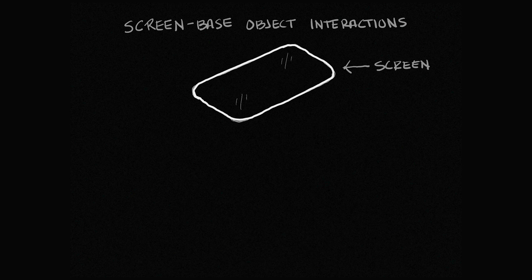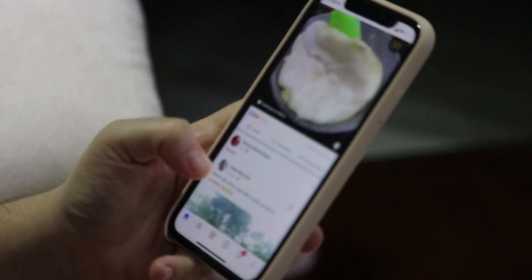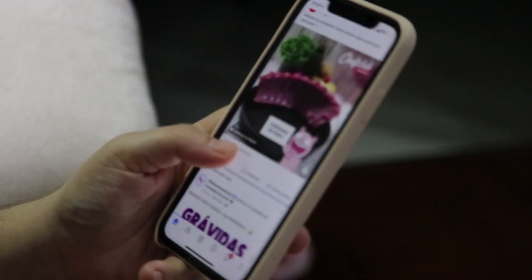There are two ways that I like to think about screen-based product design interactions: the ones that are screen-based and the ones that are object-based. Screen-based interactions are all the interactions that depend on you directly touching the screen to be able to manipulate the content. On the iWatch, these would be the existing gestures like the single-click, double-click, and screen swipes — all of these require you to interface with the screen directly.